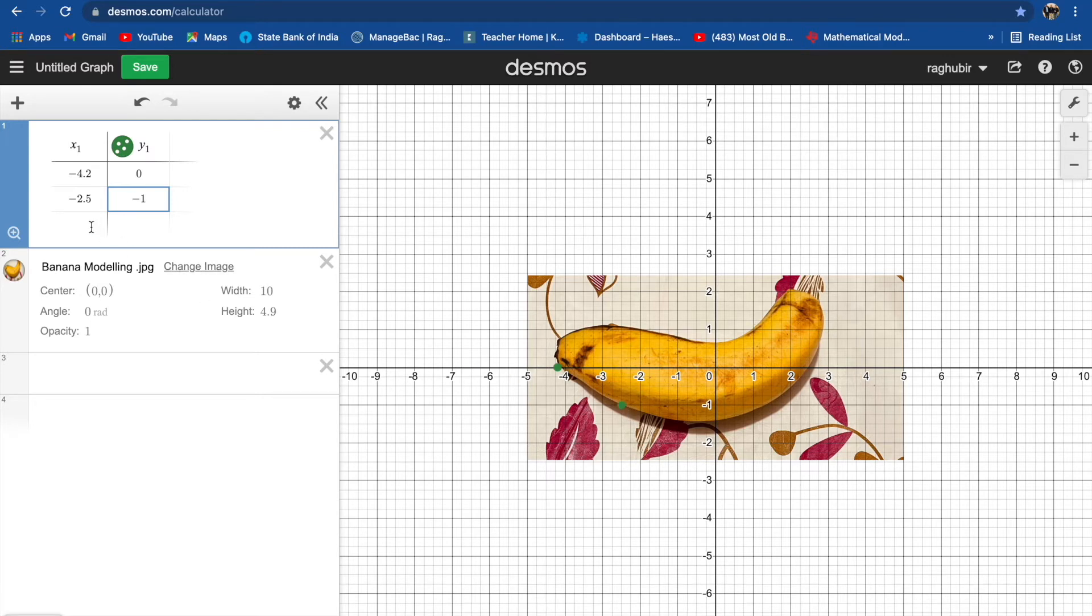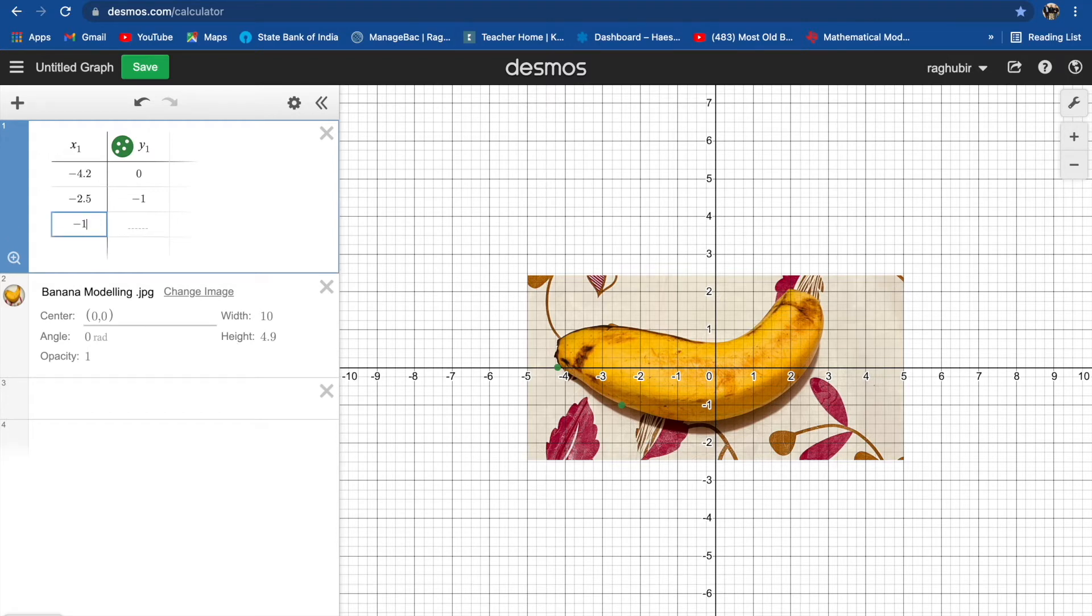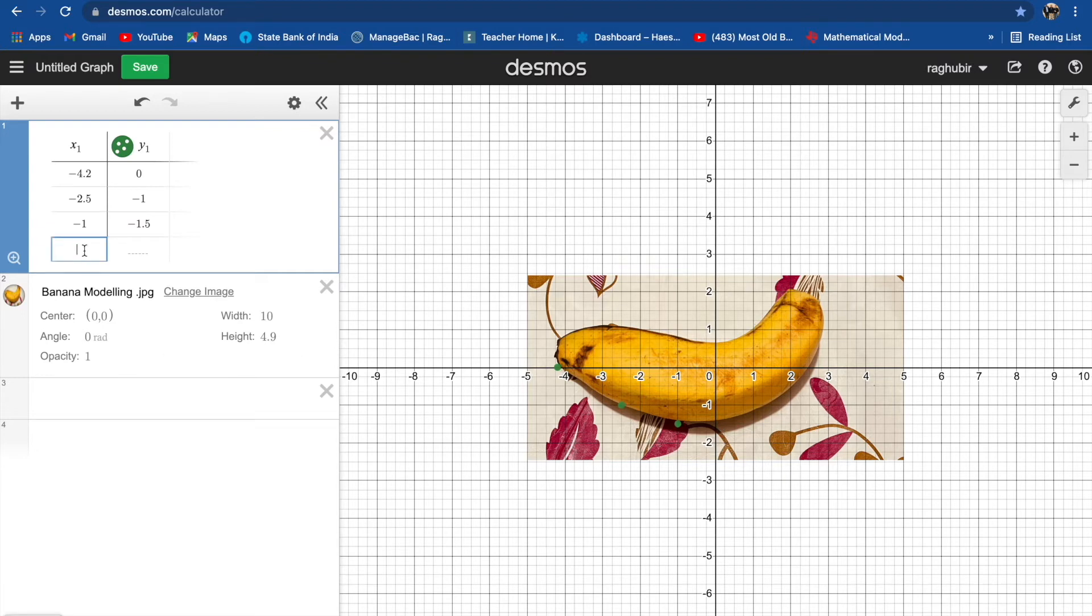At least ten points. The next point we can say is X is negative one and Y is negative 1.5. Then next point we can say is X is zero and Y is approximately negative 1.5.